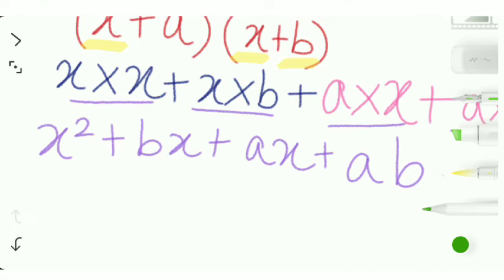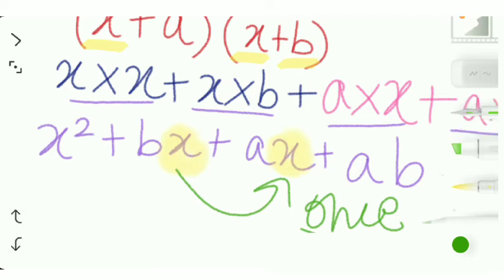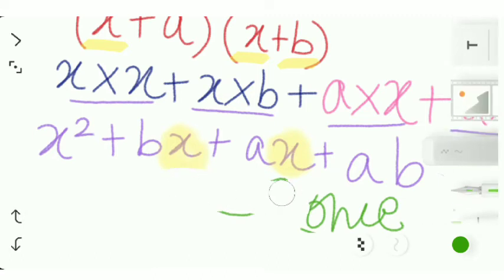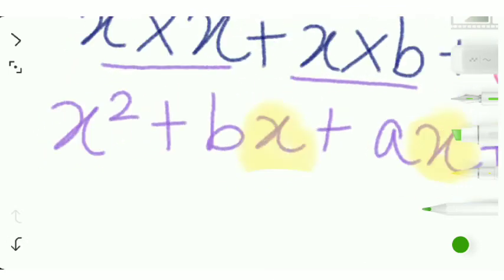So we can see that the x over here and the x over here, they are like terms. X and x, they are the same terms. So we can write the like terms only once. It's okay if we write them only once because they are like terms. Let me just show you, then I think it will be clear.